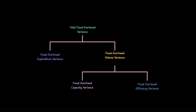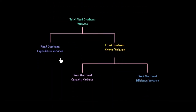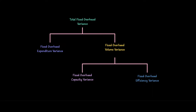We can divide fixed overhead variances as follows: there is a fixed overhead expenditure variance, which arises from differences in cost such as electricity or salaries. There is also a fixed overhead volume variance, which arises due to a change in output. The volume variance can be further decomposed into fixed overhead capacity variance and fixed overhead efficiency variance.